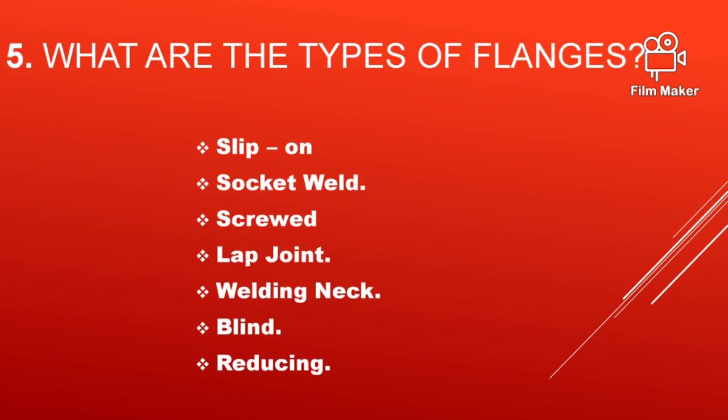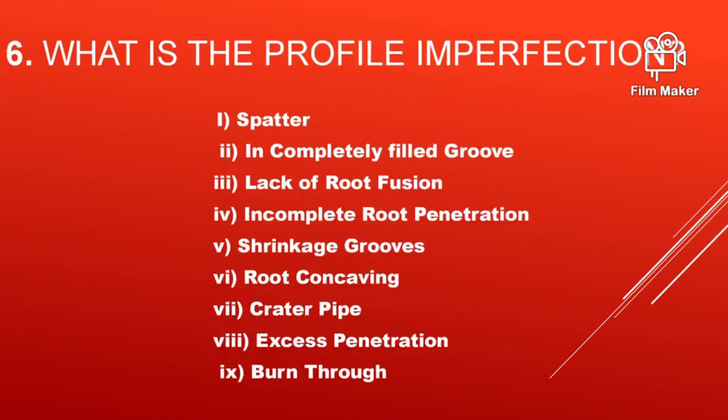What are the types of flanges? Slip-on flanges, socket weld flanges, screwed flanges, lap joint flanges, welding neck flanges, blind flanges, and reducing flanges. Based on the face of the flanges, they can be classified into flat face flanges and raised face flanges.